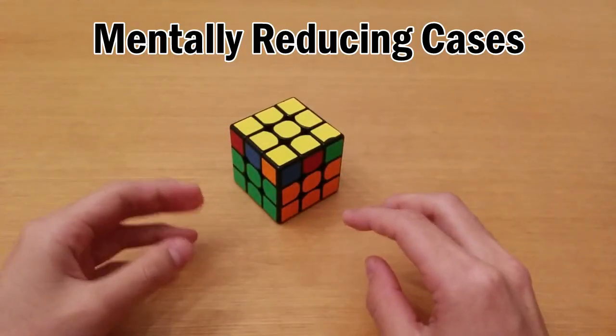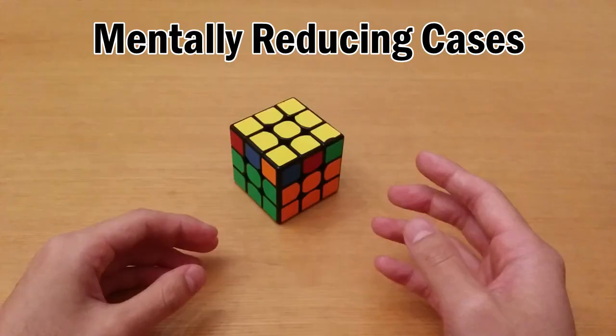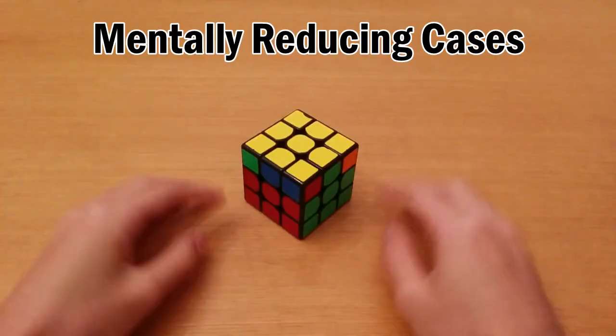So however you choose to recognize it but basically what I'm saying is that by recognizing your corner swap during OLL then once you get to PLL you can cut your recognition time by a lot. But that was the worst case you could get.